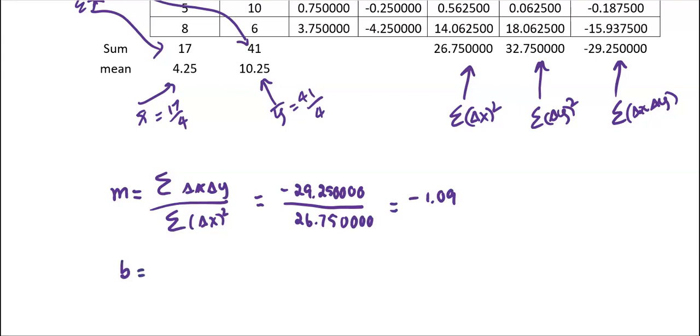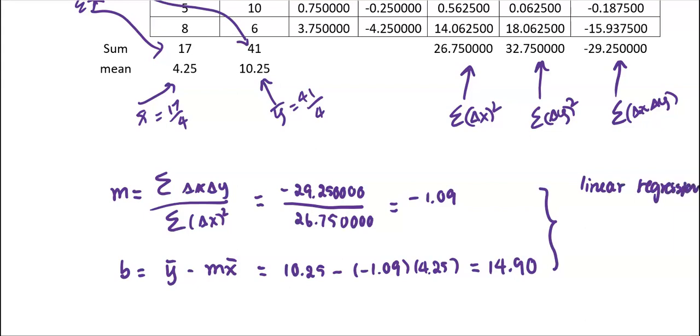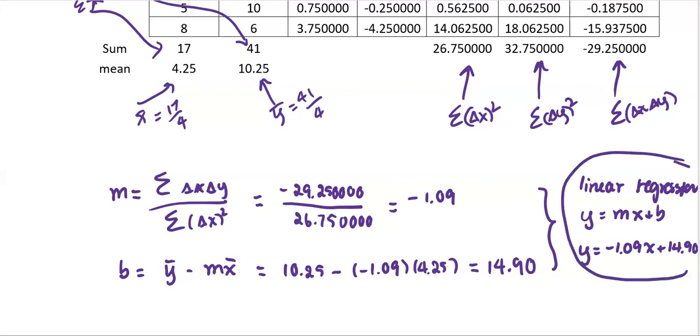The b value is from ȳ minus m times x̄, or 10.25 minus m, which is negative 1.09, times x̄, which is 4.25. And we obtain the b value as 14.9, keeping two decimal places, 14.90. Now we get the linear regression: y equals mx plus b, or y equals negative 1.09 times x plus 14.90, as the answer in part A.